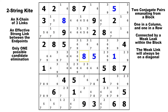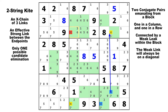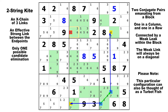Here let's take a look at candidate four. We've got a strong link in column eight from there to there, and another strong link coming out of block nine from there to there. The two endpoints are in yellow, which means our elimination candidate is in row three, column four. You can eliminate that four. There is your two-string kite with the weak link in between.